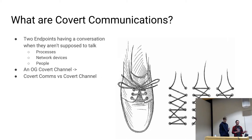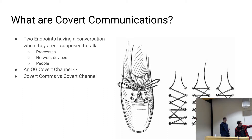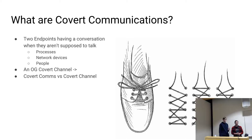So we're going to talk about a covert channel. But in order to actually talk about that, we first need to talk about what covert communications are. Really it's two things that are talking between each other when they aren't really supposed to talk. This can be anything from processes or network devices or even people. Back in the Cold War, allegedly, foreign intelligence services had ways to tie their shoelaces that indicated different kinds of messages — things like 'meet at site A' or 'I've been compromised, GTFO.'